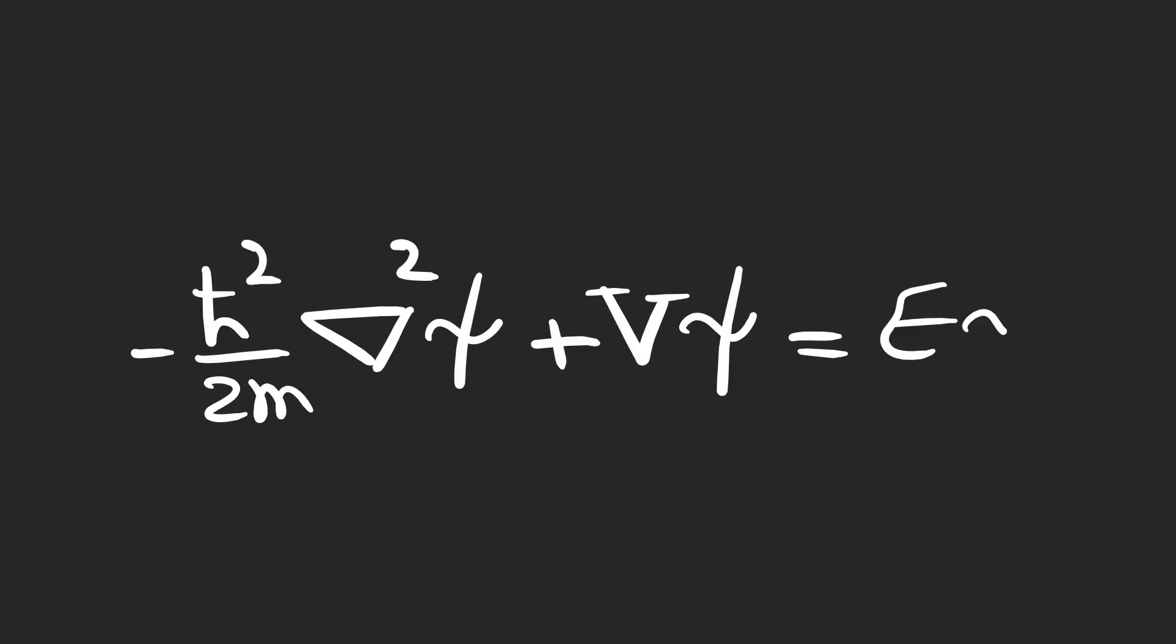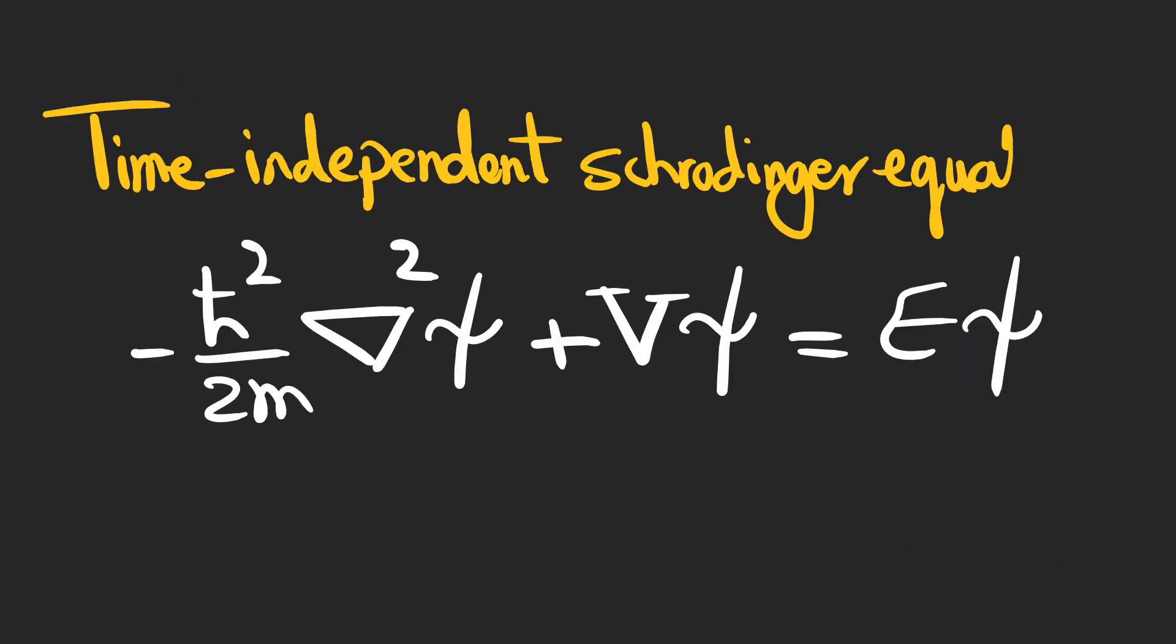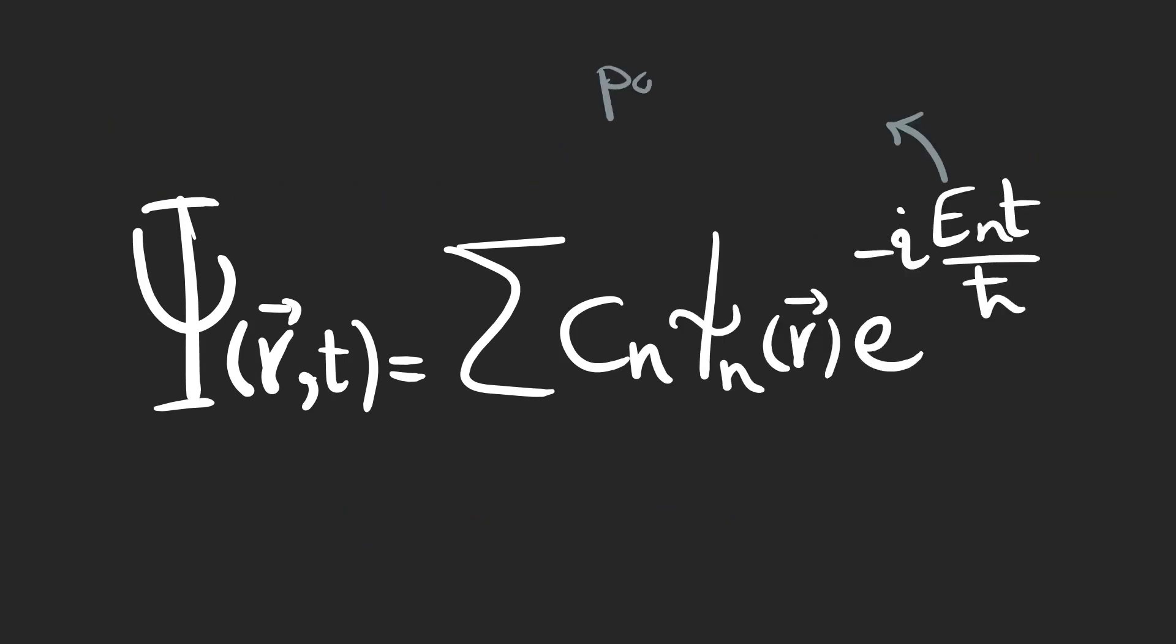Now, the only thing we need to do is to solve the time-independent Schrödinger equation to find the stationary states for the system. Finally, the solution to the Schrödinger equation can be written as a sum over all possible energies.